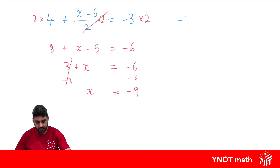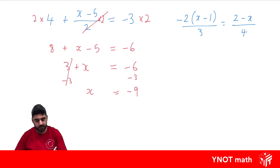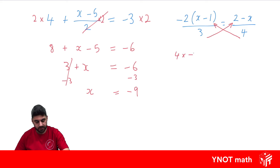What about minus 2 outside of (x minus 1) all over 3 equals (2 minus x) all over 4? Again we have two fractions equaling each other, so we cross multiply: take this denominator and multiply it by the other numerator. We get 4 times negative 2(x minus 1) equaling 3 times (2 minus x). It's important to wrap these in brackets because we have to multiply by everything.